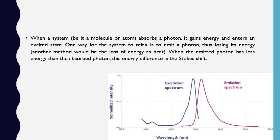We should think about why this happens. When a system — in our case a molecule or atom — absorbs a photon, it gains energy and moves to an excited state. One way for the system to relax is to emit a photon, losing some energy in the form of heat. When the emitted photon has less energy than the absorbed photon, the energy difference is observed as the Stokes shift.